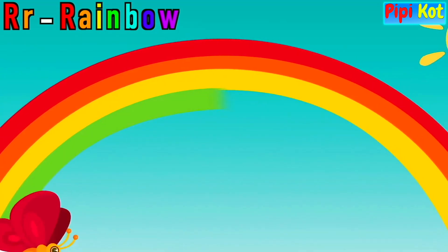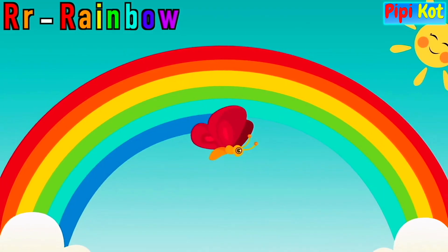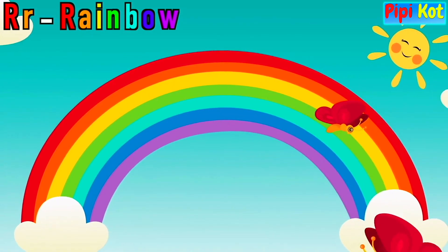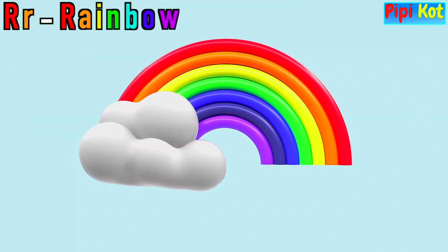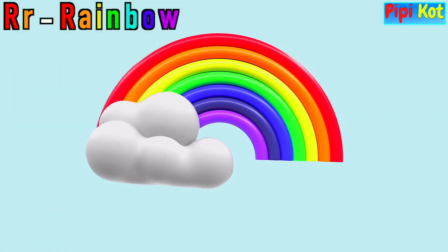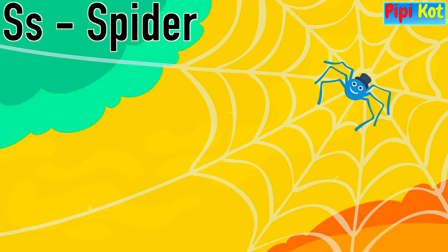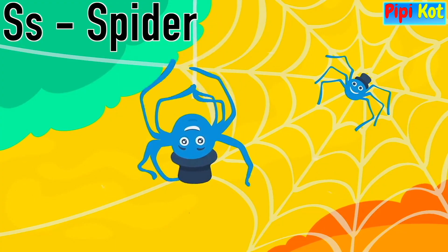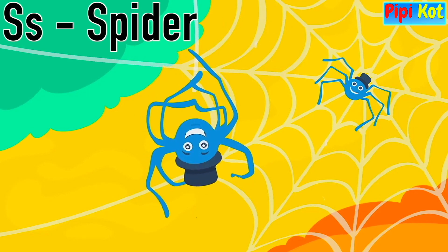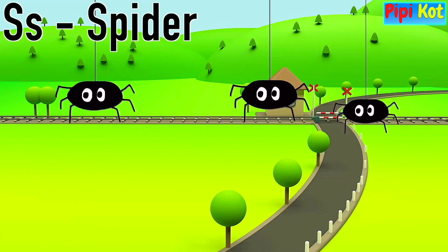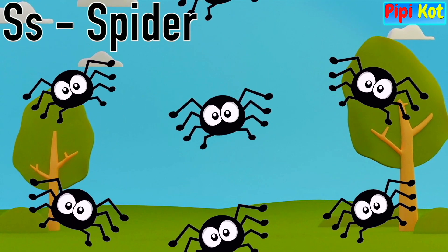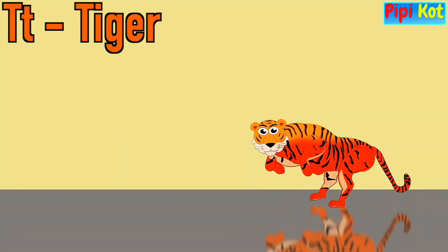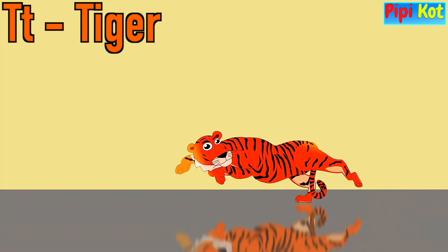Queen. R is for Rainbow. R, R, Rainbow, R, R, Rainbow, R. Rainbow. S is for Spider. S, Spider, S, Spider, S.